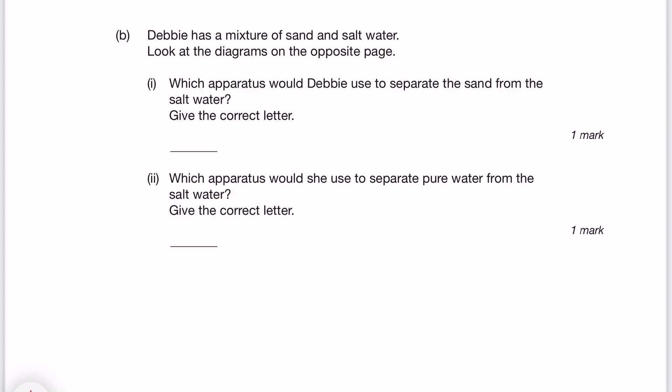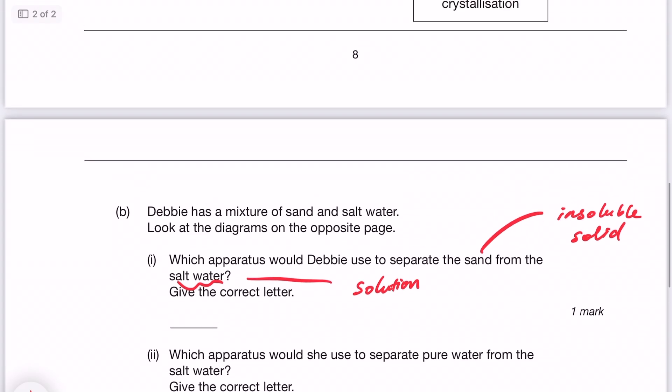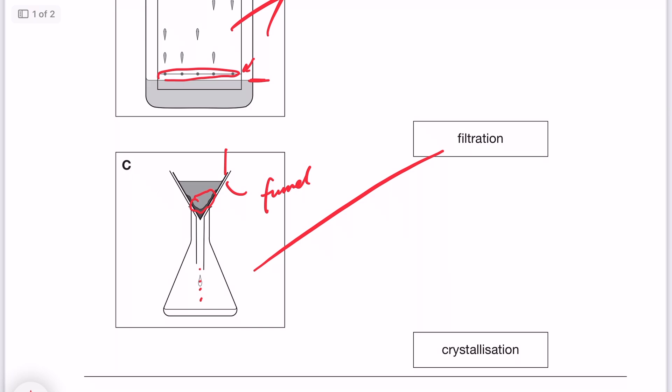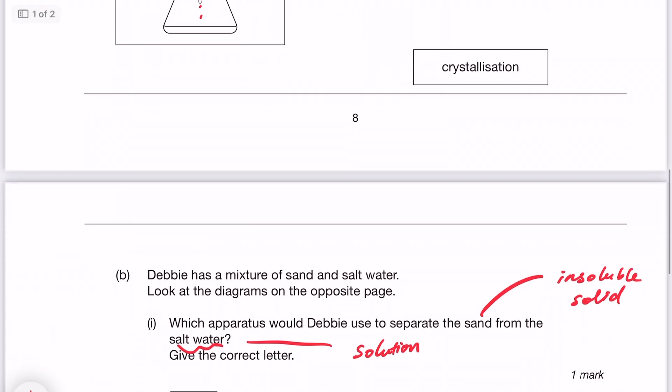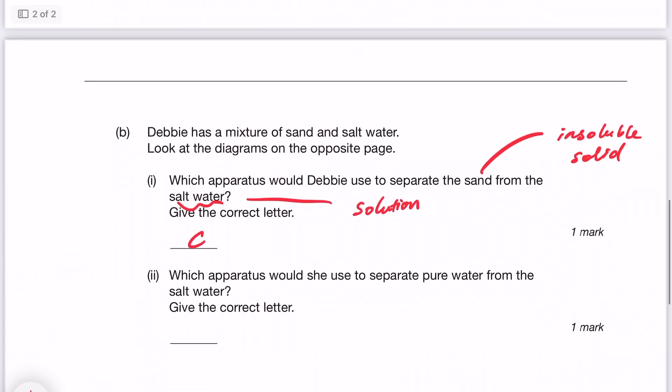Which apparatus would Debbie use to separate the sand from the salt water? Let's analyze it, shall we? The salt water, that is a solution. And the sand in this case is insoluble solid. What do we use to separate solution and insoluble solid? We would usually use filtration to do that. And in the last page, filtration is C, which means the answer for the question will be C.